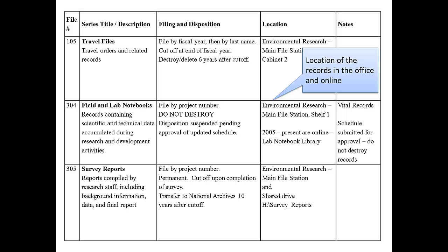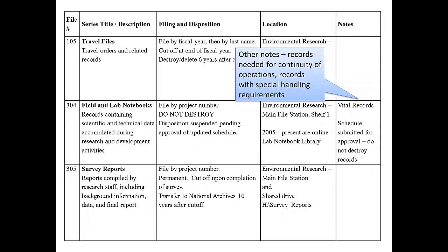The file plan tells the location of the records in your office. You can include both paper and electronic records in your file plan. This example points to records in the department's central files area, and it also identifies records that are stored on a shared drive and in an information system. Your file plan can also help your office identify special types of records. If records require special handling because they contain personal or confidential information, you can note that on the file plan. You can also identify vital records — those essential records your office will need when responding to or recovering from a disaster.